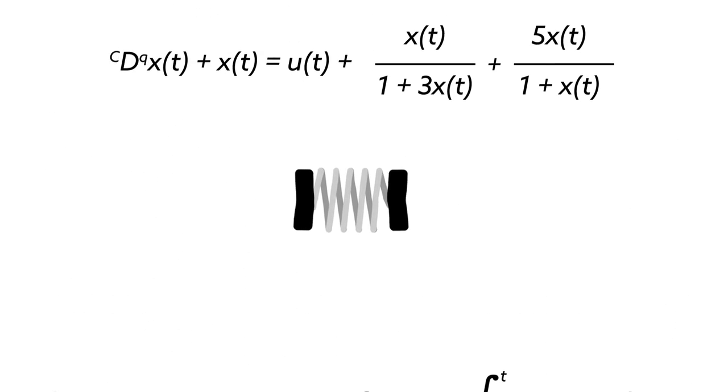The mathematicians tested their technique numerically on a spring-like model. Although seemingly simple, the model was built using the same type of equations the team looked at before, making its behavior highly unpredictable, but not uncontrollable.